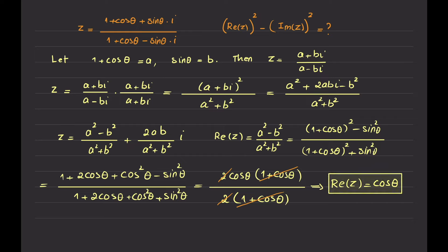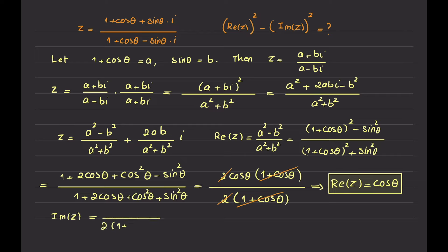Now I want to do the same calculation for the imaginary part. The denominator of the imaginary part is exactly the same as the denominator of the real part, which I already calculated to be 2 times 1 plus cosine theta. The numerator of the imaginary part is 2 times A times B. Substituting A as 1 plus cosine theta and B as sine theta, this is 2 times 1 plus cosine theta times sine theta. The common factors cancel, leaving simply sine theta. So the imaginary part of the complex number is sine theta.